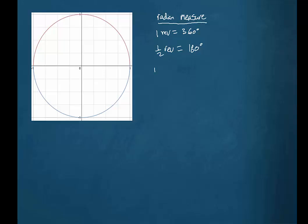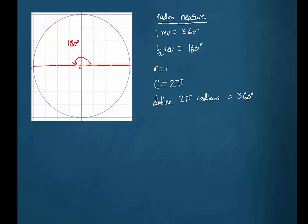If the radius is one, then the circumference of the circle is just 2π. So what we're going to do is define a measure of 2π radians, and define 2π radians to be the same as 360 degrees. Starting at the positive part of the x-axis and going one half of a turn — one half of a revolution — would again be 180 degrees. But if one entire revolution is 2π radians, then 180 degrees, one half of a revolution, is going to be π radians — half of 2π.